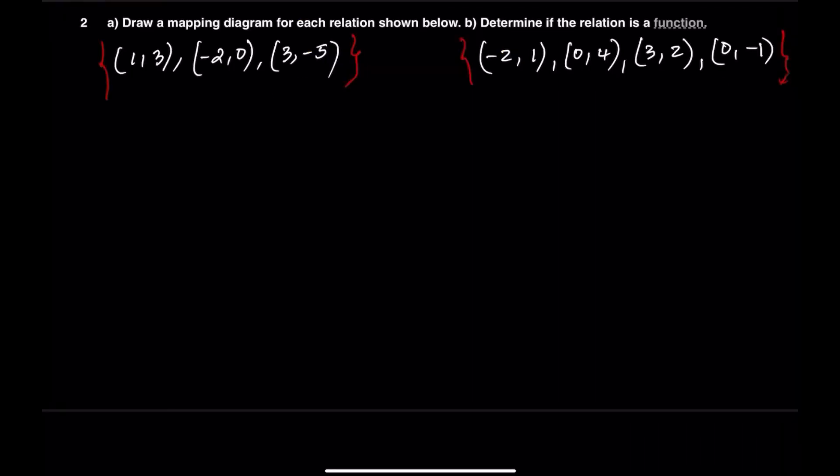Now let's take a look at the second question, which asks us to create a mapping diagram. Let's begin by looking at the first relation on the left side. We're going to identify the domain and the range. For the domain, we have the input values: negative 2, 1, and 3. For the range, we have the output values: negative 5, 0, and 3.